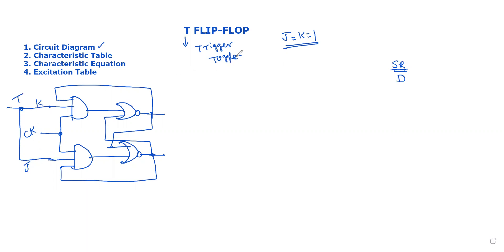If we have a toggling condition, there are two toggling conditions. We check T equal to 0 and T equal to 1. When T equals 0, we check the same state — meaning the output remains the same as the present state. If there is a change in the present state, we still check the same state.